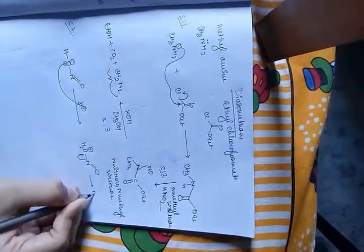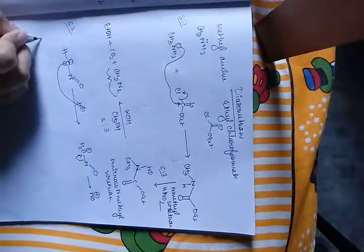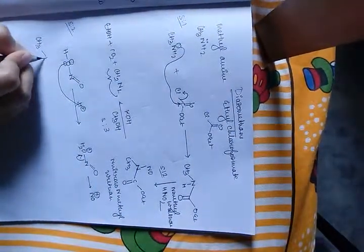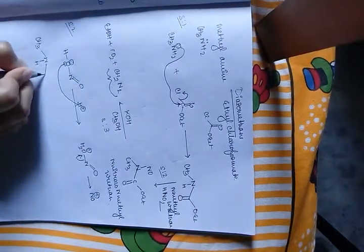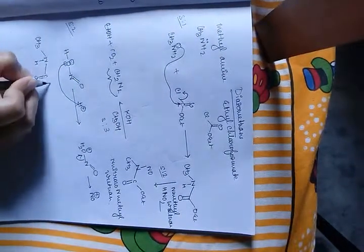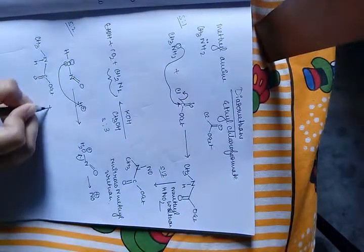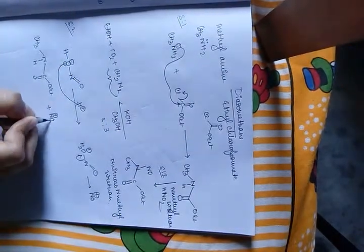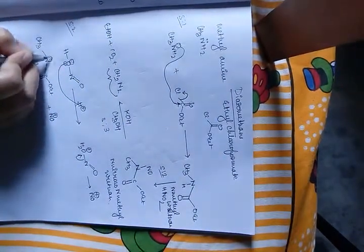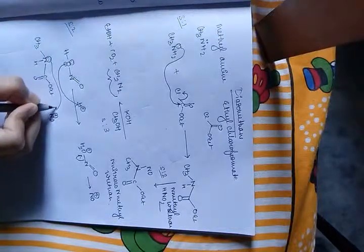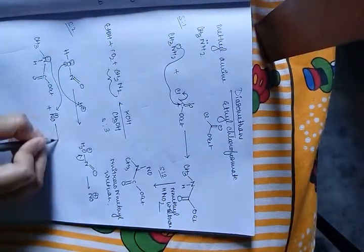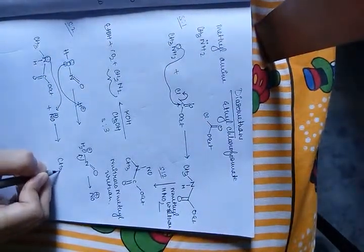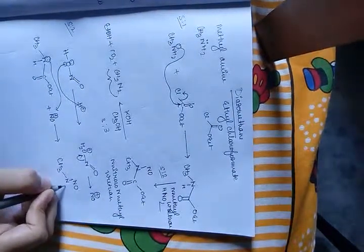Then this leaves and NO+ electrophile forms. In N-methyl urethane, nitrogen has a lone pair and it attacks this electrophile, NO+, through its lone pair, and N-nitroso-N-methyl urethane forms.